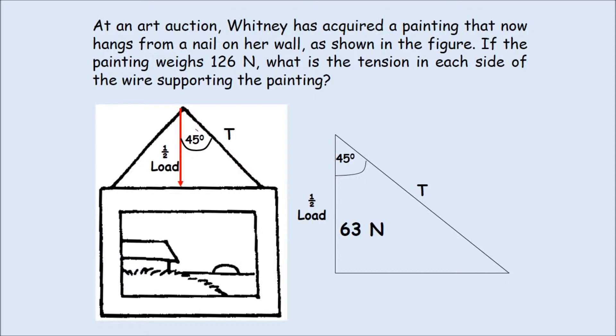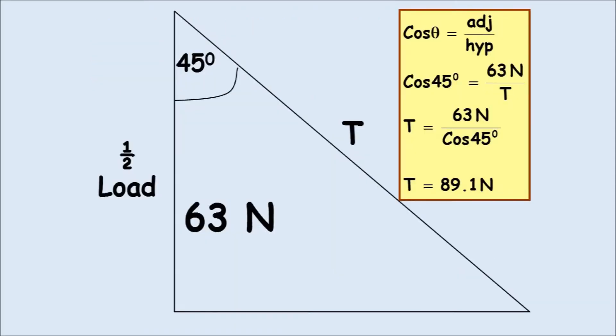You know the angle, which is 45. So you're going to set up an equation for cosine. So you know cosine theta equals adjacent over hypotenuse. Cosine 45 equals 63 newtons over T. And we have to solve for T. T is the tension. So the tension equals 63 newtons over cosine 45 degrees. And that's going to be 89.1 newtons. So that's the answer for the tension.